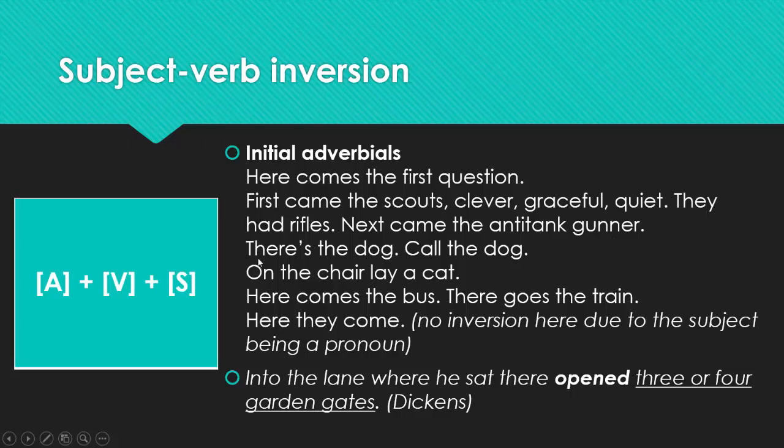Inversion. There's the dog. Call the dog. If we ask a question, the question will be where. So, we have here there. The direct word order would have been the dog is there. But we stressed a word. We paid more attention to the word there. There's the dog. Call the dog. The next example is almost the same, but with a cat and the chair. On the chair lay a cat. A cat is a subject. Lay the verb. On the chair is a stressed part, the adverbial of place.